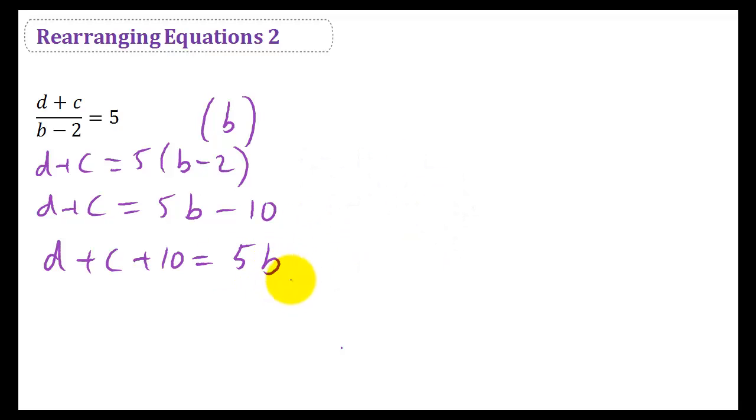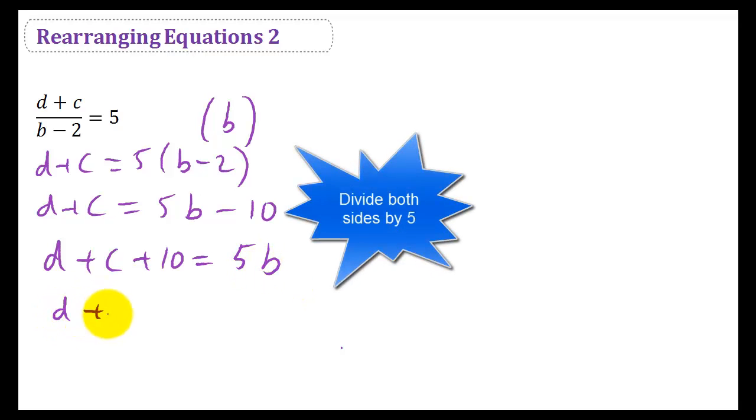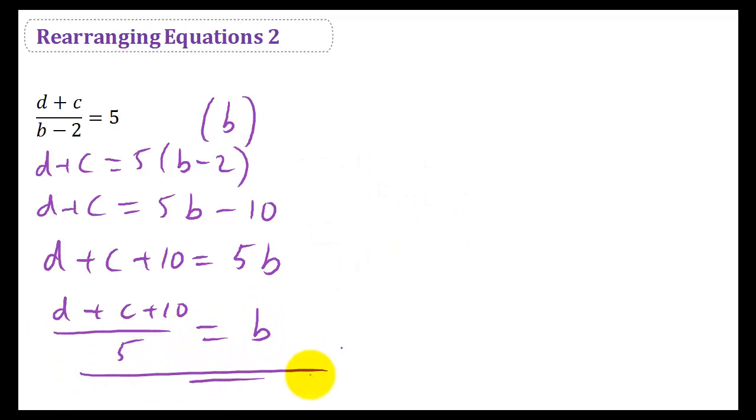And to get B on its own, if we're timesing by 5, we undo that by dividing by 5. So you get D plus C plus 10, all divided by 5, and that gives you B.